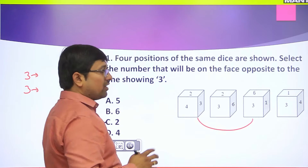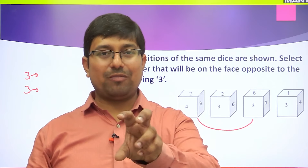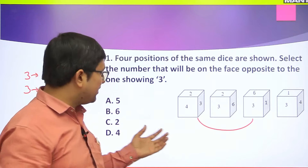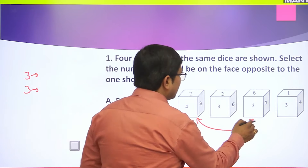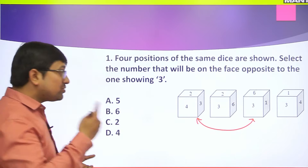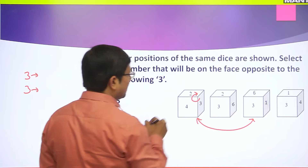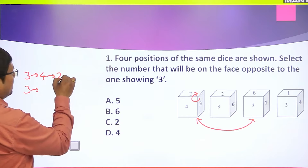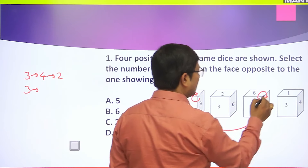Again, if two or more positions of the same dice are given and they have exactly one common face, we can find out all three pairs of opposite faces. Both images share common face 3. Starting from 3 and going clockwise in figure 1: after 3 comes 4, after 4 comes 2. In figure 3, starting from 3 clockwise: after 3 comes 6, after 6 comes 1.